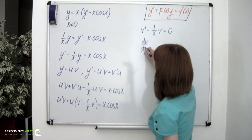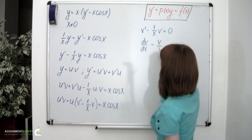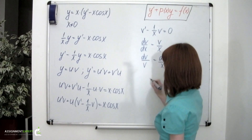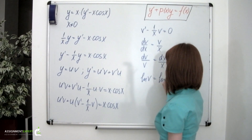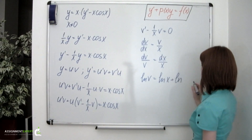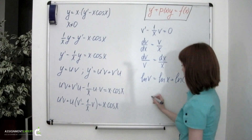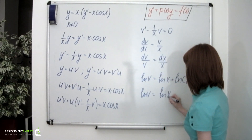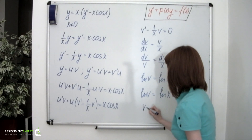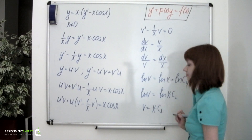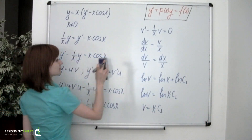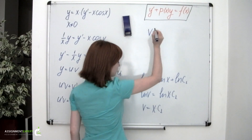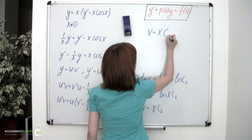dv over dx equals v over x. dv over v equals dx over x. ln v equals ln x plus a constant, or we can write the logarithm of a constant: ln v equals ln of (x times the constant). And then finally v equals x times the constant C₁. So this is our v function: x multiplied by the constant C₁.